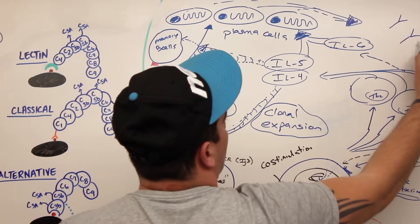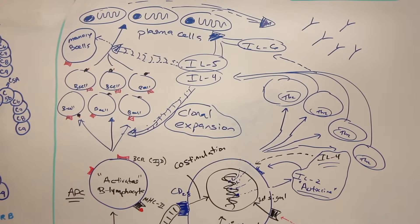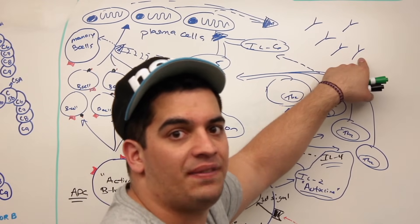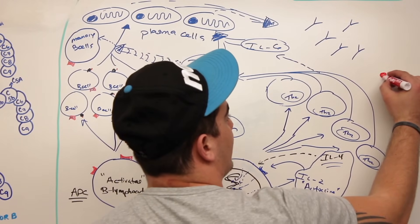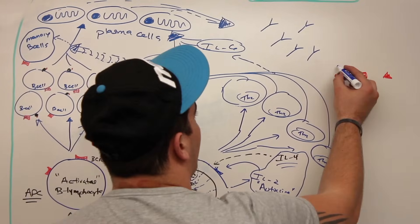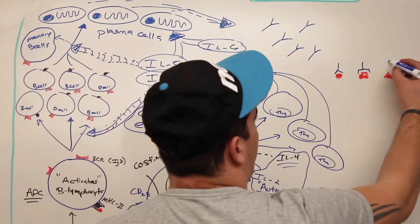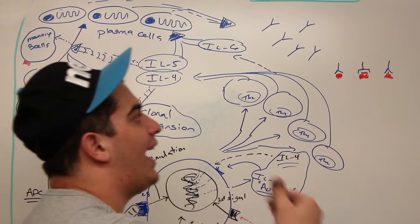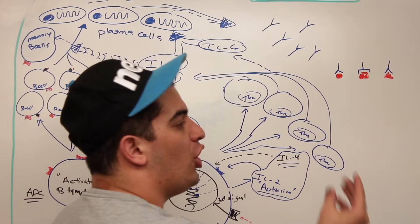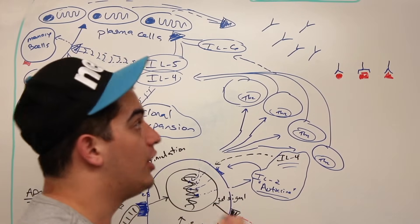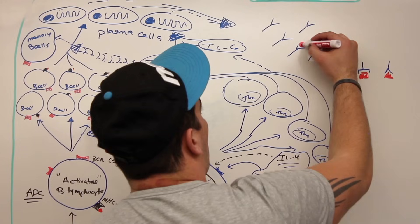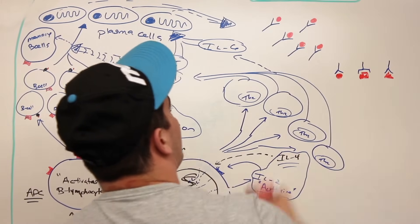The plasma cells start secreting antibodies. These antibodies are specific to that foreign antigen — very specific. Antibodies have a specific variable region that can change from antibody to antibody through recombination: you shuffle the DNA to produce different antibodies with different variable regions that can bind to different types of antigens. So these antibodies being produced by plasma cells are specific to that foreign antigen from the microbe we've been dealing with.